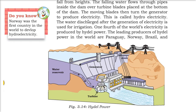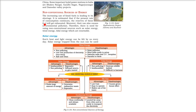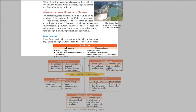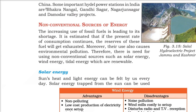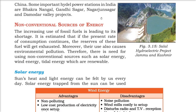The leading producers of hydro power are Paraguay, Norway, Brazil, and China. In India, we have Bhakra Nangal, Gandhi Sagar, Nagarjuna Sagar, and Damodar Valley projects for hydro-based electricity production. This is the Salal hydroelectric project in Jammu and Kashmir.